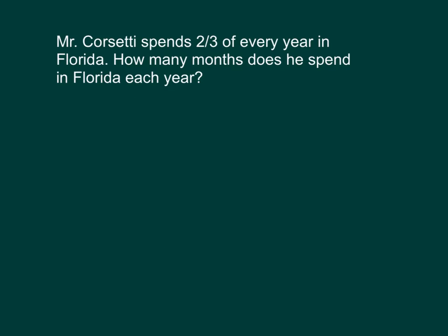Mr. Corsetti spends two-thirds of every year in Florida. How many months does he spend in Florida each year? So it's two-thirds of a year. That's two-thirds times one year. One year equals how many months? Right, 12 months. So let's rewrite that as two-thirds times 12 months.